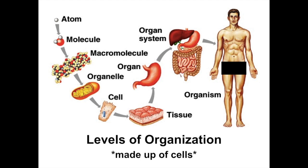This is going to be very important as we look at the levels of organization. Atoms make up molecules or compounds. Molecules and compounds then form a larger group called a macromolecule. Then they form organelles. When we get to the cell unit, we're going to be talking about all the little organelles — the baby organs of a cell, just like our body has organs. A cell has organs, and we call them organelles. Many organelles with different functions form a cell.